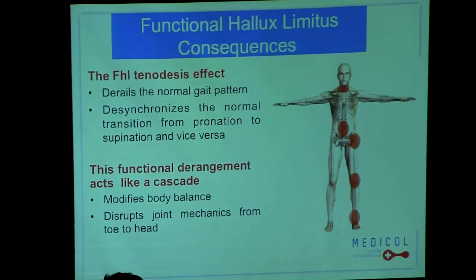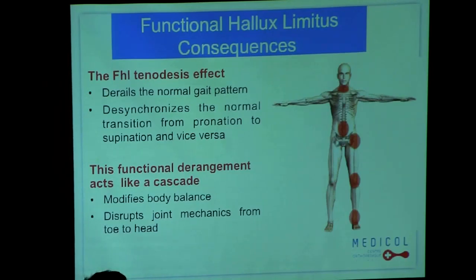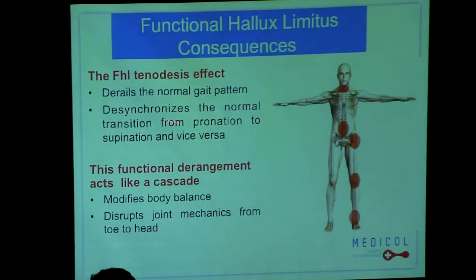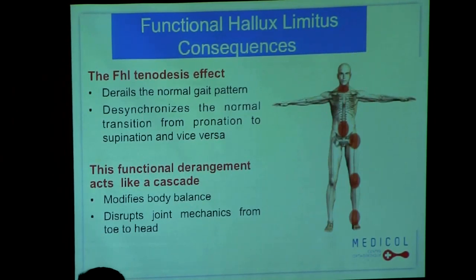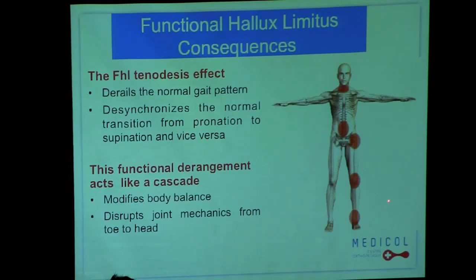The consequences of functional hallux limitus are that it modifies the synchronism in gait and creates a time lag. The synchronization of the transition from pronation to supination is displaced and delayed. That changes, in cascade, all the function of the lower limb during gait. And the implications are not only at the foot level, but also at the knee, the hip, the low back, and so on.